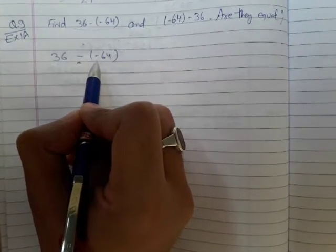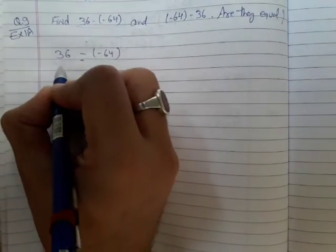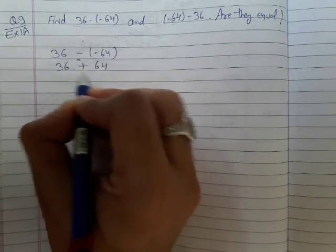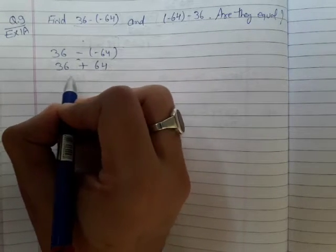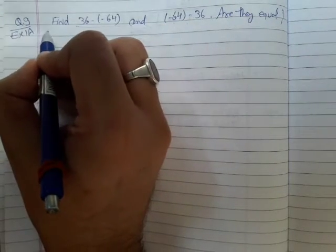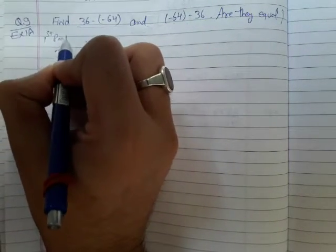negative sign, this is also negative sign. So I will remove this bracket. Negative negative will become positive and it is 64. And if I add 36 and 64, I will get 100. This is the first part. Now second